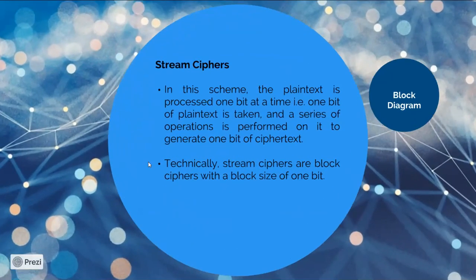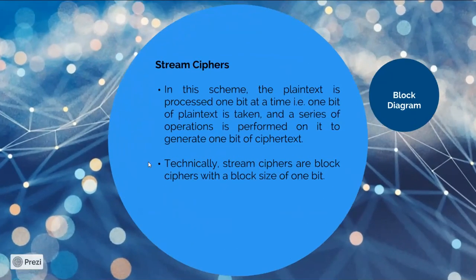So stream cipher — what happens in a stream cipher's scheme is that it will process your plain text bit by bit at a time. One bit will come and then it will directly convert. And then a series of bits will come.